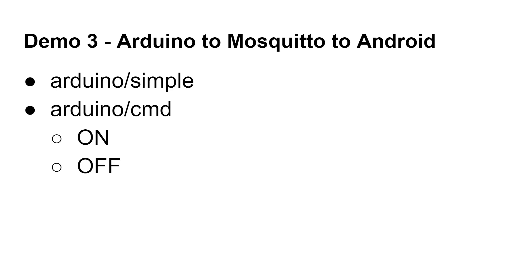There are also ways of subscribing to wildcards and things like that, but we won't talk about that now. This basically allows us to say: this is the Arduino send channel, this is the Arduino receive channel — effectively the publisher and the subscriber.